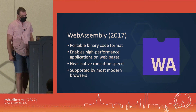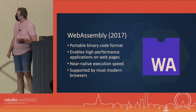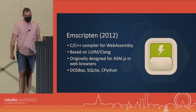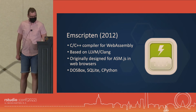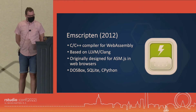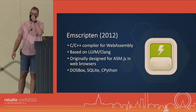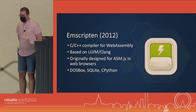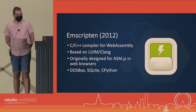WebAssembly is supported by most modern browsers — you can think of it as Java, but good. The next thing that makes this work is Emscripten, a compiler for WebAssembly that converts C code into WebAssembly. It's based on LLVM and has been around for a few years, successfully used in several projects.